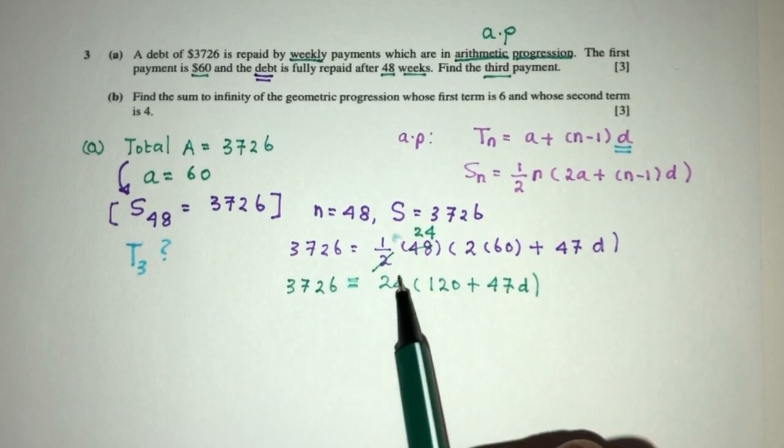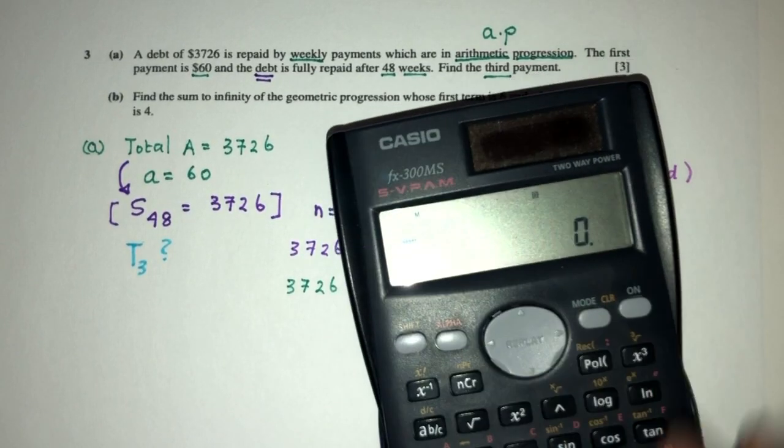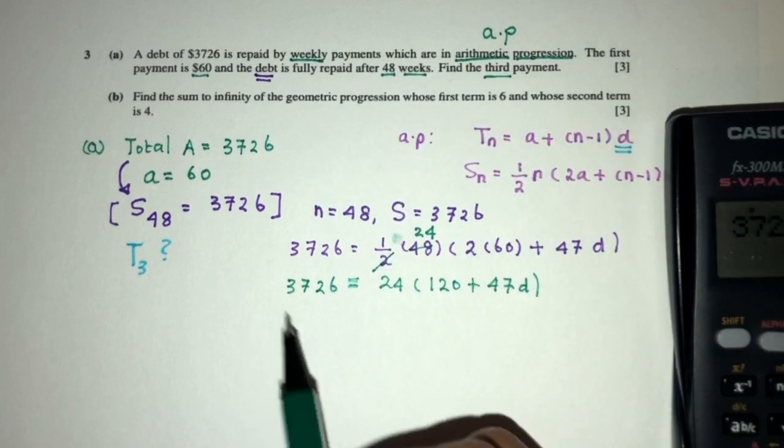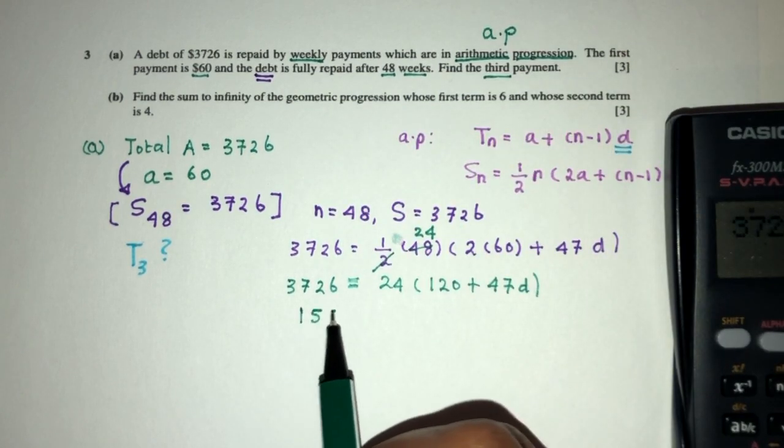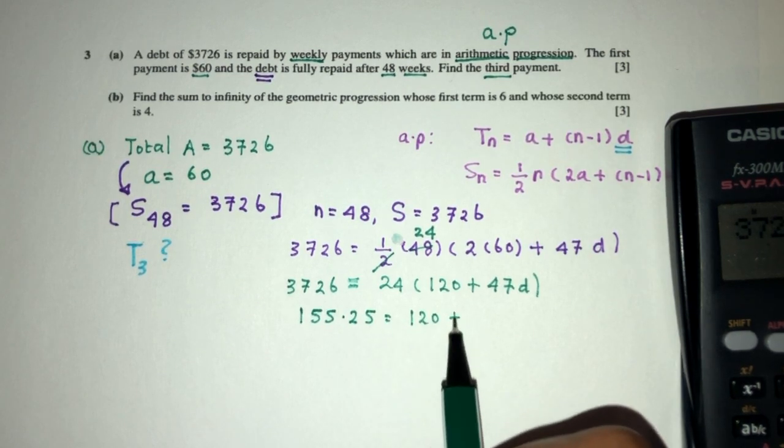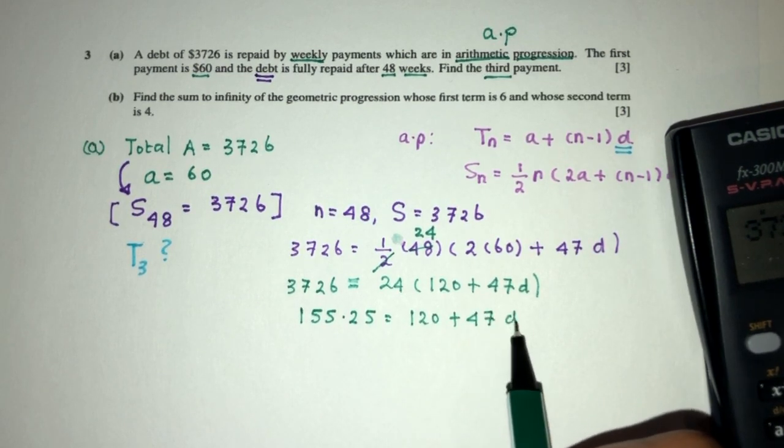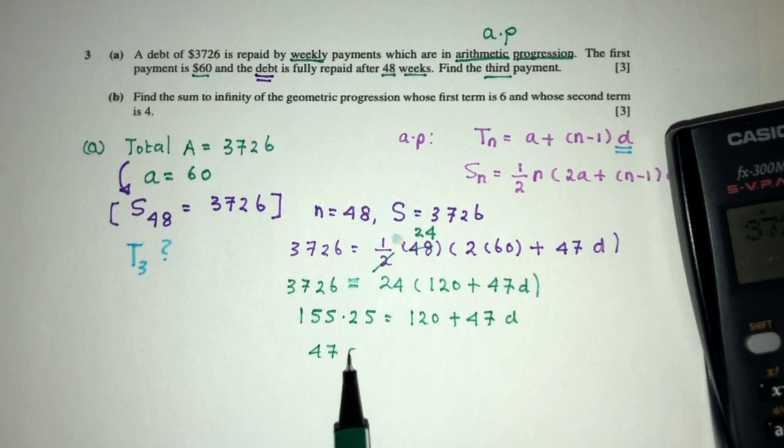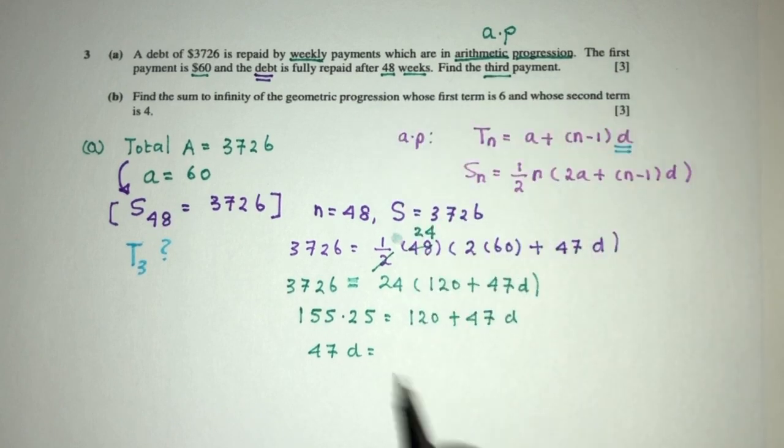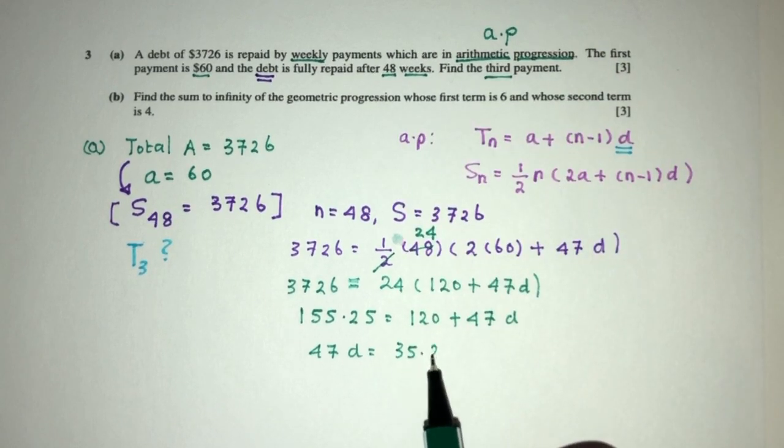Now, we can also simplify this. So let's try 3,726 divided by 24. That will be 155.25. That will be 120 plus 47D. Now, minus obviously, so 47D equals you this minus 120, that will give you 35.25.